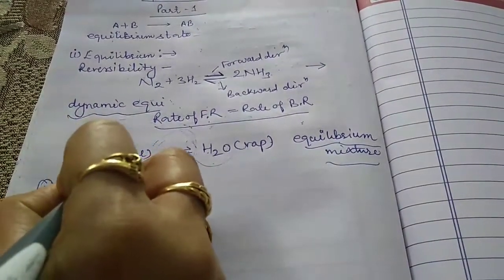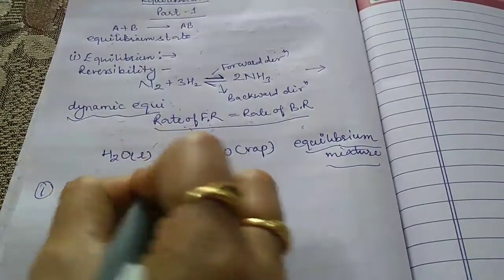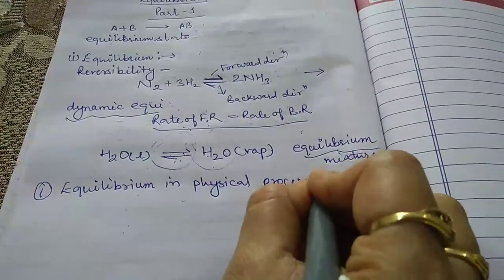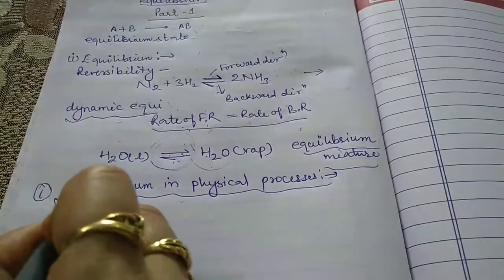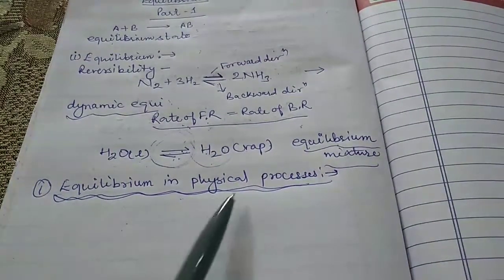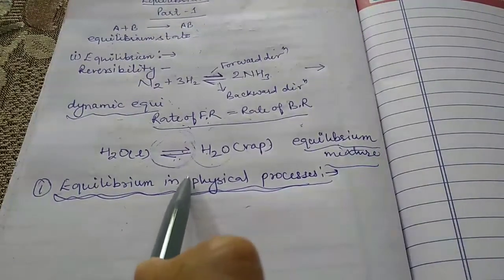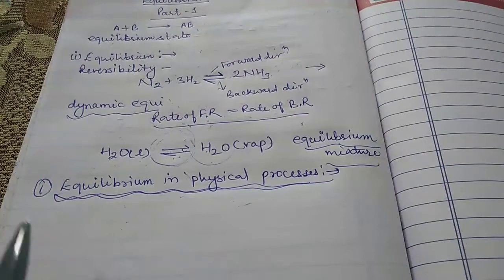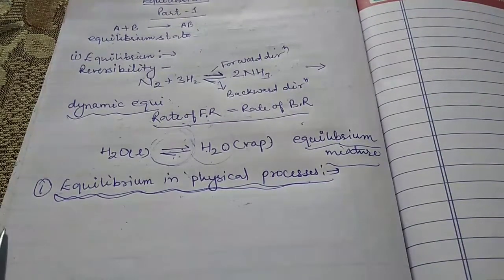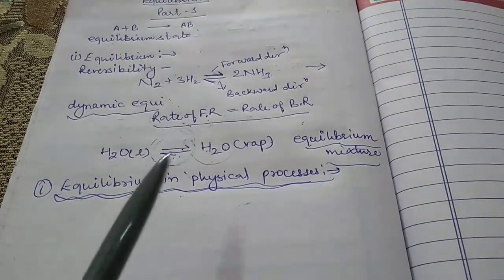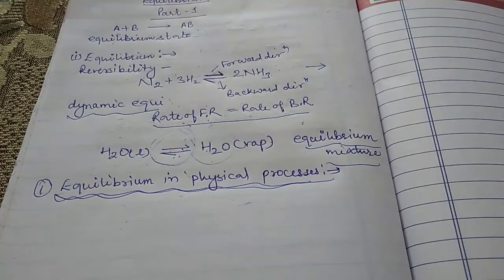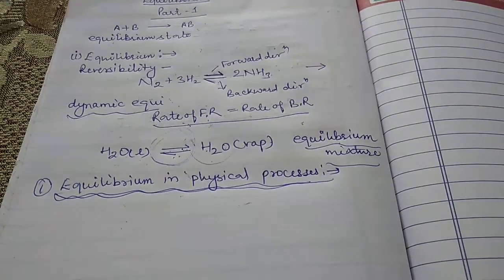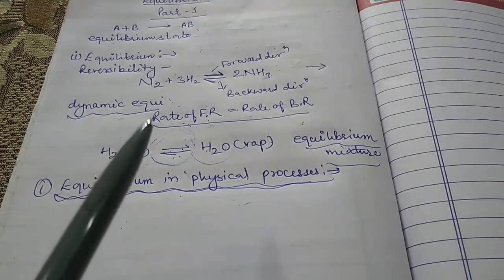The next topic is equilibrium in physical processes. Physical processes include examples such as melting of ice to water, evaporation of water to steam, and dissolution of sugar in water. These are all physical processes.